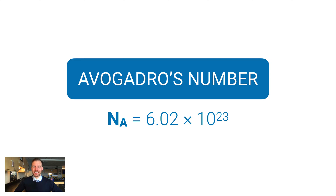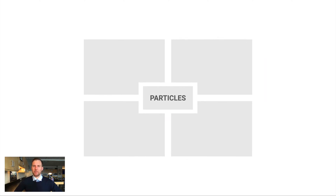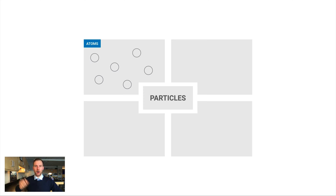So you'll sometimes see that notation, and it's just referring to 6.02 times 10 to the 23rd — also known as Avogadro's number, also known as the mole. Now, what do I mean by particles? Particles can refer to lots of things. One is atoms — atoms are just the simplest building block. If you have a bunch of copper atoms or sodium atoms, those are individual atoms on their own, and those are types of particles.